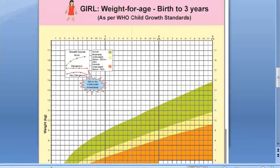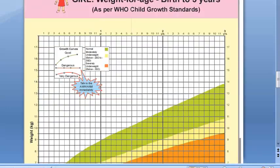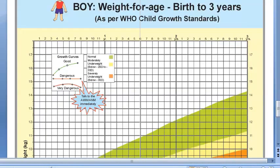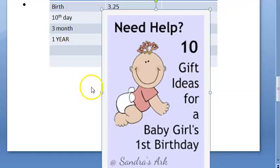For girls, the maximum weight at 3 years is just under 14 kgs. For boys, it is just above 14 kgs at 3 years. So the difference between boy and girl is minimal.